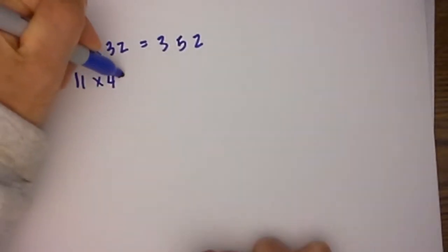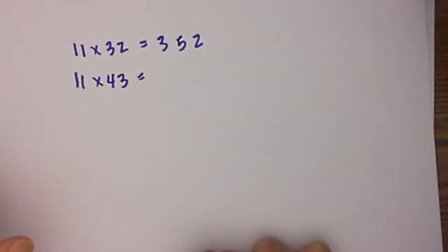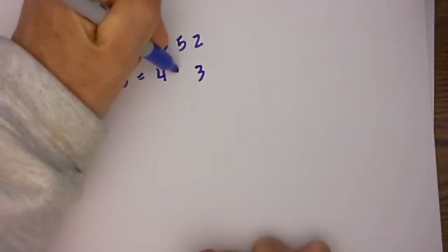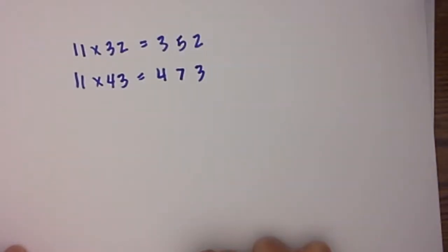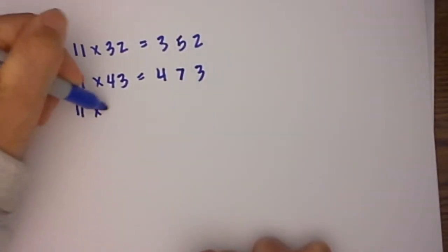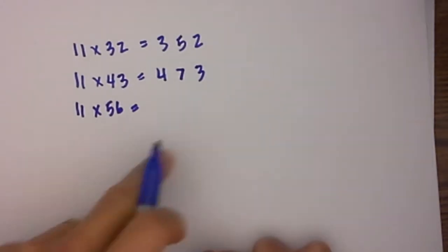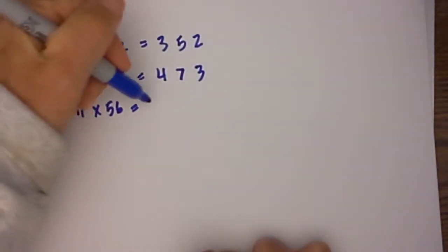You can tell it is simple. You don't really have to do anything other than add. Again, 11 times 43: spread the two numbers out, 4 plus 3 is 7. And finally I would like to multiply 11 times 56 because it has an exception, or one rule you need to follow.